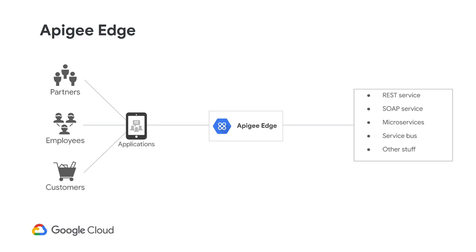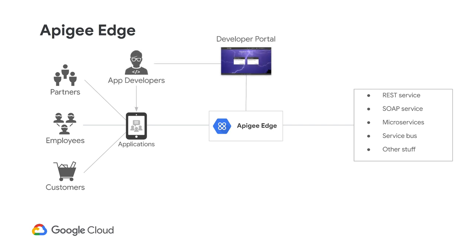We put Apigee Edge in here to control how applications can access the backend. We also have to think about application developers — the people who write those applications. How will they gain access? What do we need to do to get them credentials so Apigee will let them into the backend services? How will they read documentation, learn how your APIs work, and sign up for access? As traffic flows through, we'd like to create reports on which applications are accessing this, what they're doing, how frequently they're calling, and traffic trends.